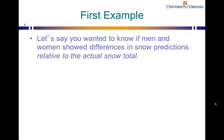In our first example, let's say we wanted to know if men and women showed differences in snow predictions relative to the actual snow total of 15 inches. In Minitab, we're given two columns of data: gender and snow predictions. Snow predictions is an interval scale, but in order to demonstrate these nonparametric tests, we want to convert it into an ordinal scale.